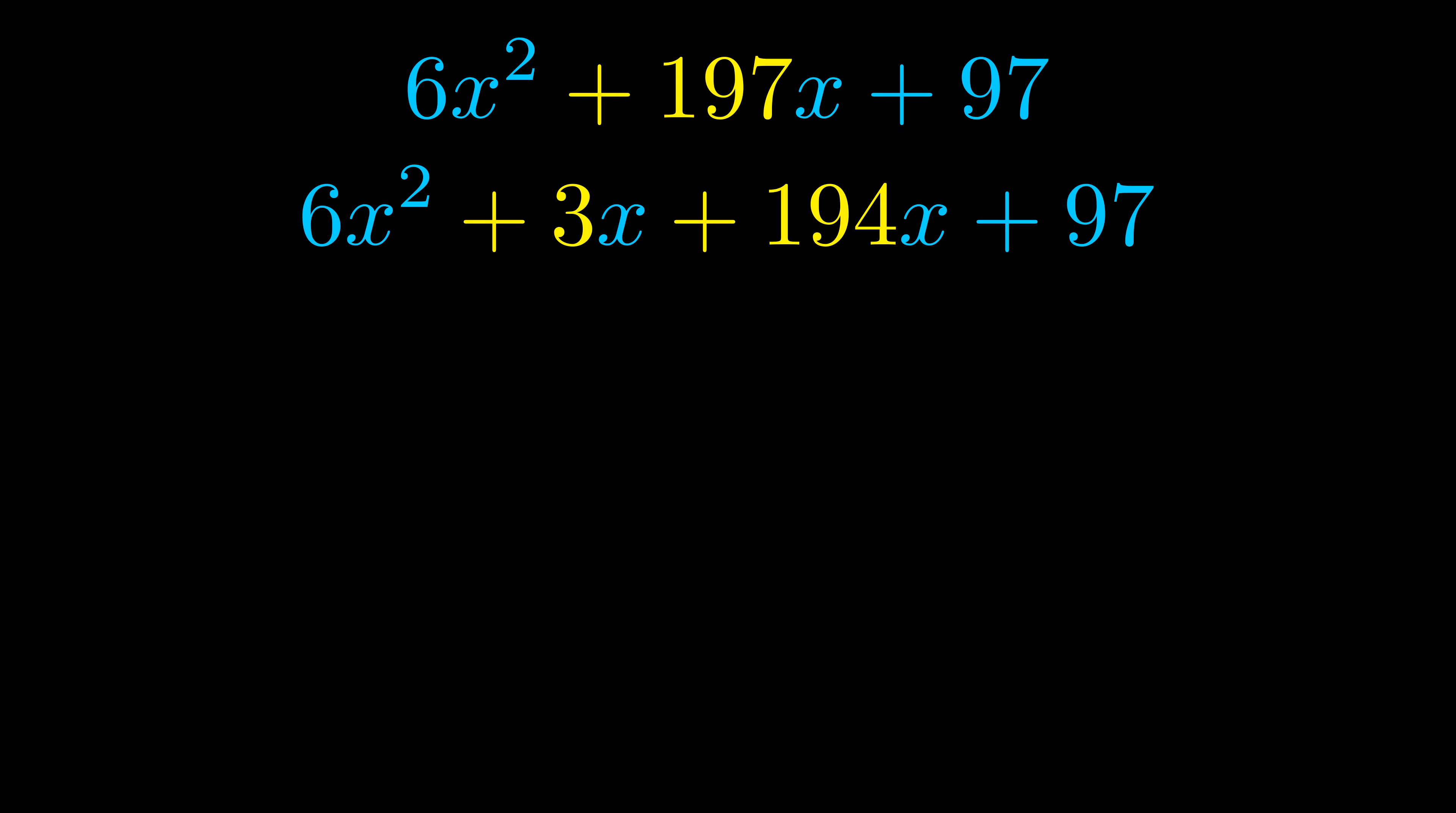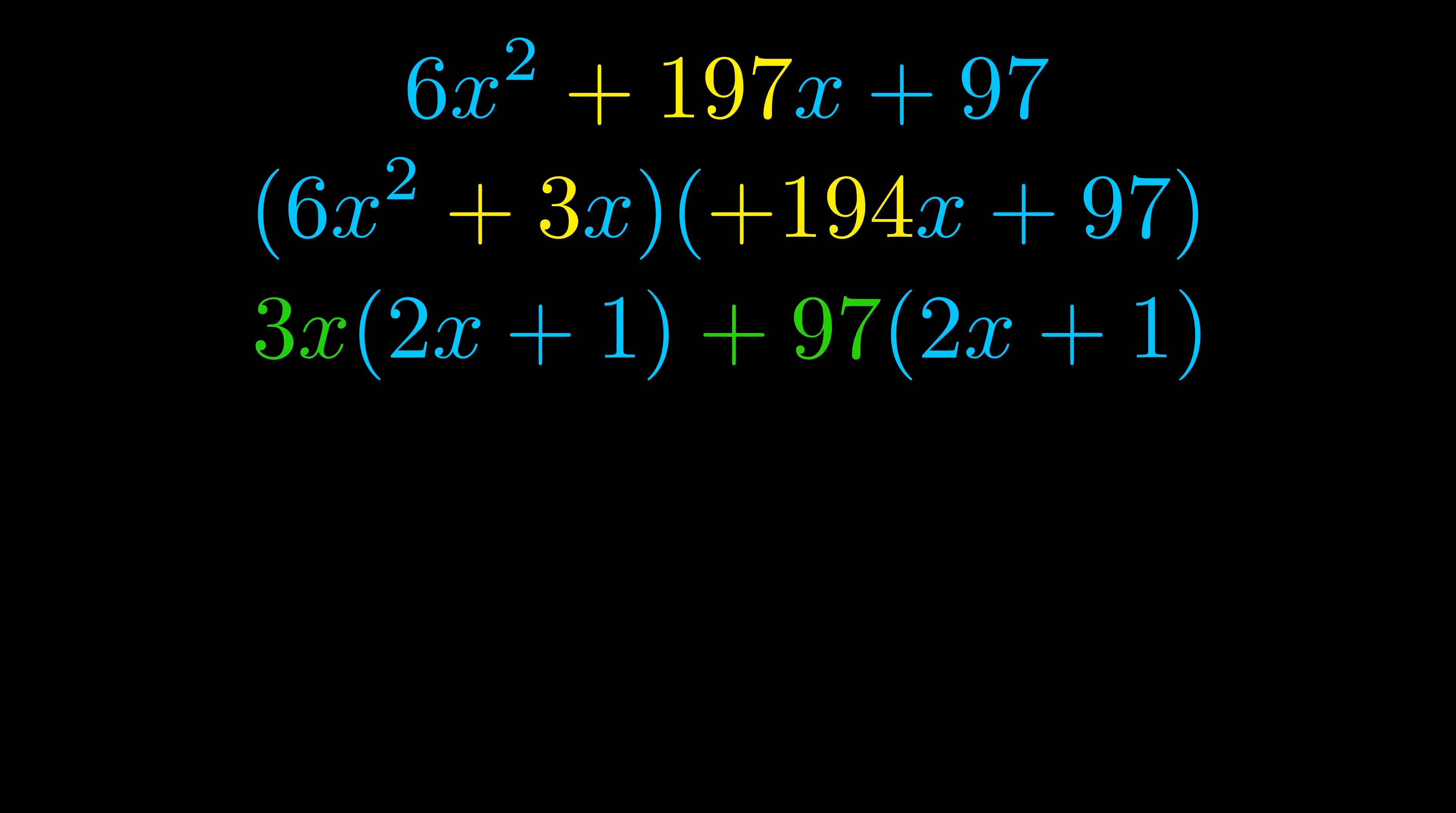Once we've done this we go ahead and we put parentheses around the first term and the last term. And we do that so that we can take the greatest common factor out of both terms. We can see the greatest common factor is now outside in green. Notice also how what remains inside of the parentheses is the same in both cases. The blue values are the same.